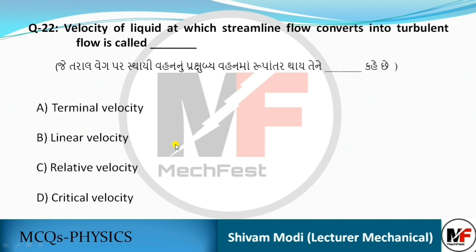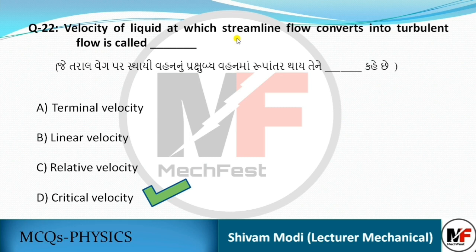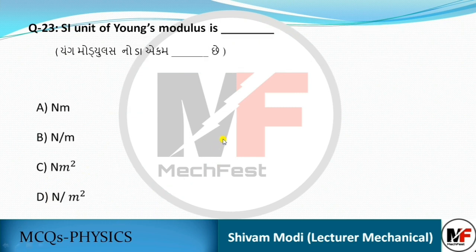The velocity of a liquid at which streamlined (laminar) flow converts into turbulent flow is called critical velocity. When a liquid is flowing in laminar flow and suddenly transitions to turbulent flow, that transition velocity is the critical velocity.